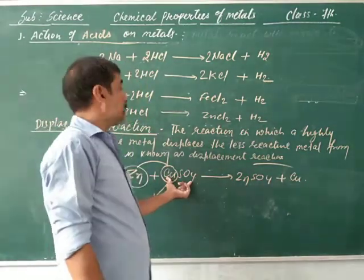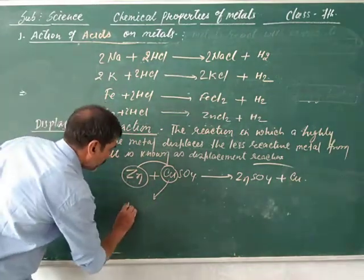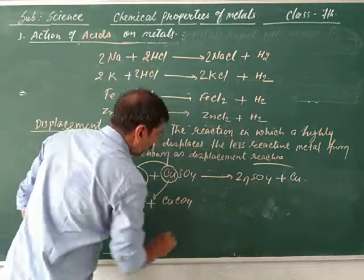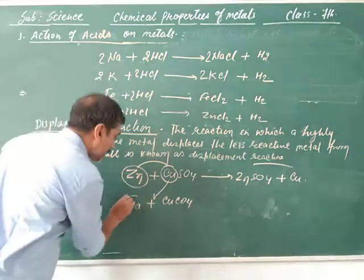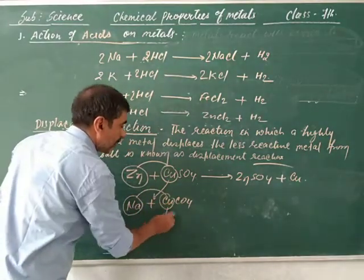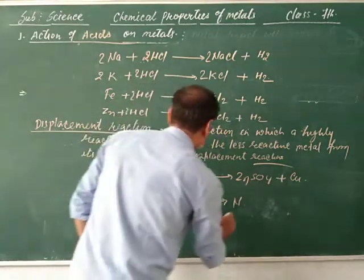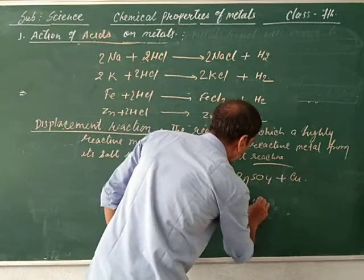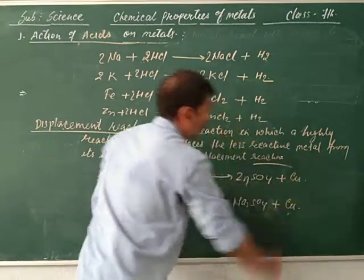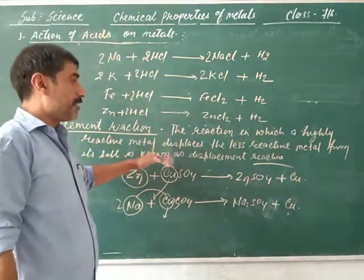This is known as displacement reaction. Same as when sodium is placed in copper sulfate, sodium is the highly reactive metal — it displaces the copper from its salt and forms sodium sulfate plus copper. So this is the displacement reaction: a highly reactive metal displaces the less reactive metal from its salt.